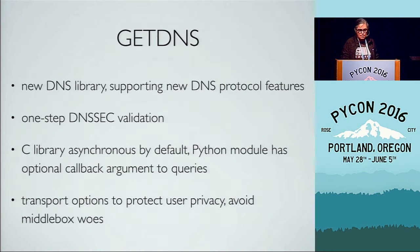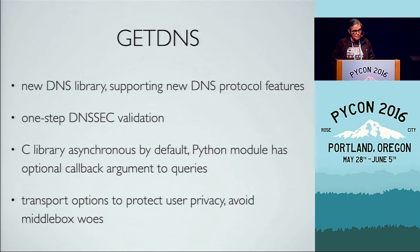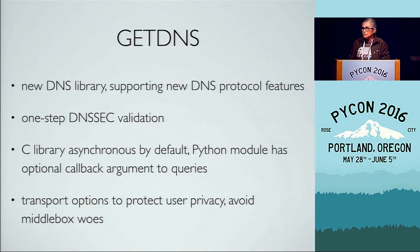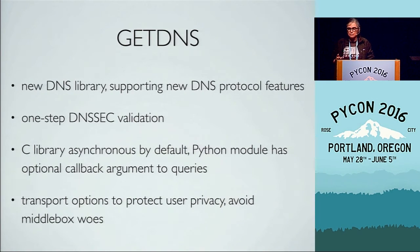The context for this is that we've got a library called GetDNS. It's a new DNS library supporting new DNS protocol features, because there has been an awful lot of DNS protocol development going on in the past several years. The library itself provides one-step DNSSEC validation. It's asynchronous by default. It has transport options to protect user privacy, avoid problems traversing what we call middle boxes — firewalls, NATs, and other network transport intermediaries that sometimes cause difficulties for applications. Our goal is to make advanced DNS features available to application developers without requiring you to know much about the protocol details.